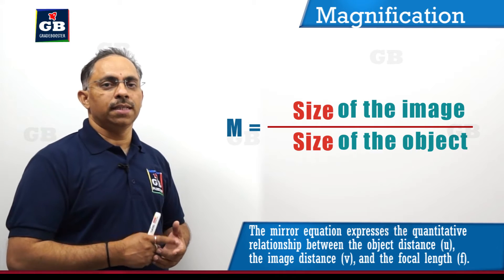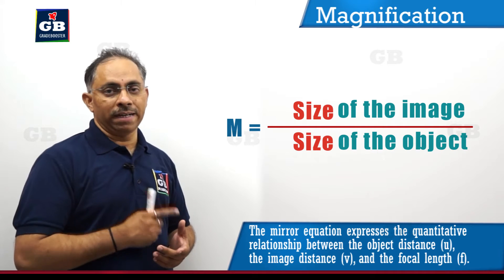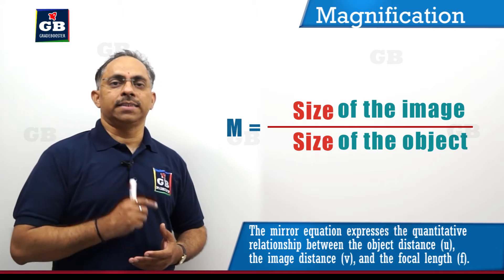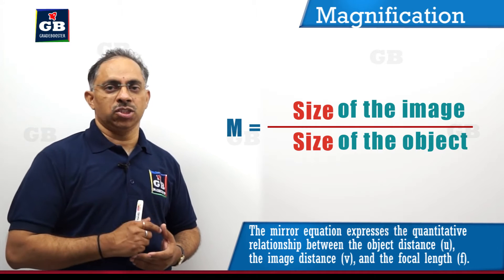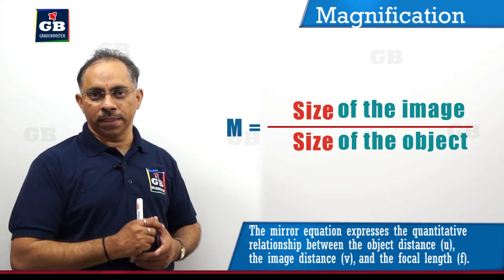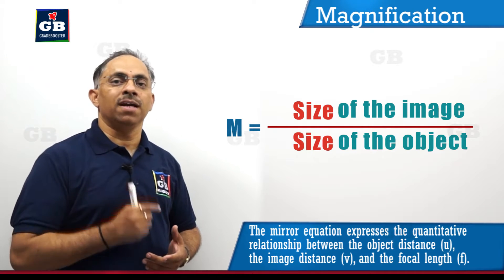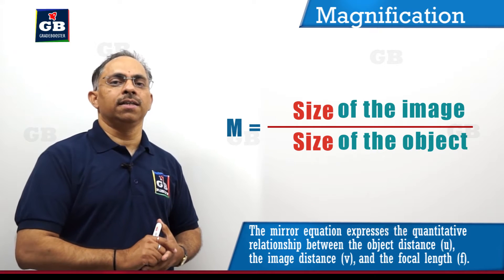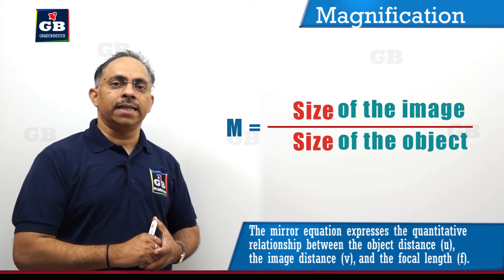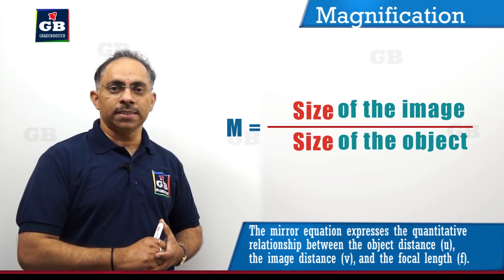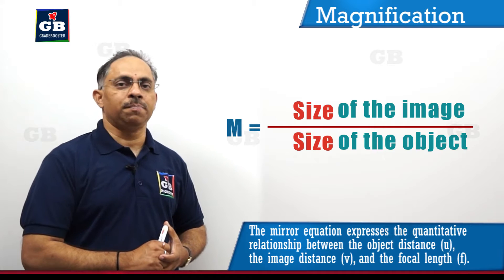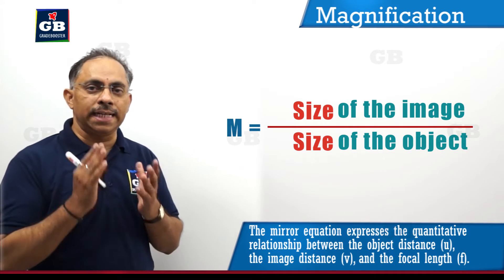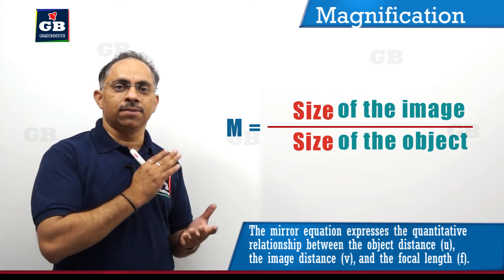We will discuss about magnification. When we want to measure the size of the image as compared to the size of the object, we use the term magnification. Magnification is a term which takes the ratio of the size of the image with respect to the size of the object — basically comparing the size of the image with respect to the size of the object.